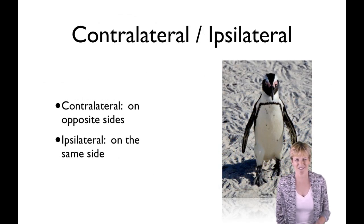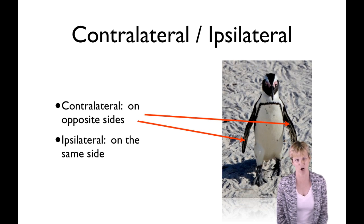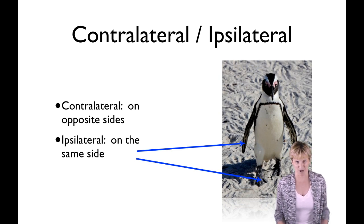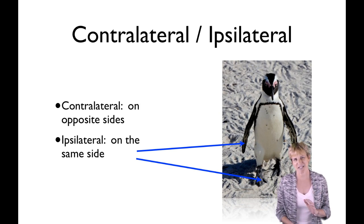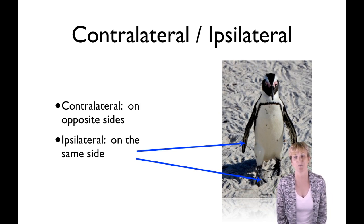Contralateral and ipsilateral refer to the sidedness of things. Contra means against, so contralateral means on opposite sides. Ipsi comes from a Latin root meaning the same, so ipsilateral means on the same side. For example, your right and left arms are contralateral, but your right arm and your right foot are ipsilateral — they're on the same side. This will be really helpful when we start talking about skeletal muscles that occur in pairs, which can contract together or independently on one side or the other.